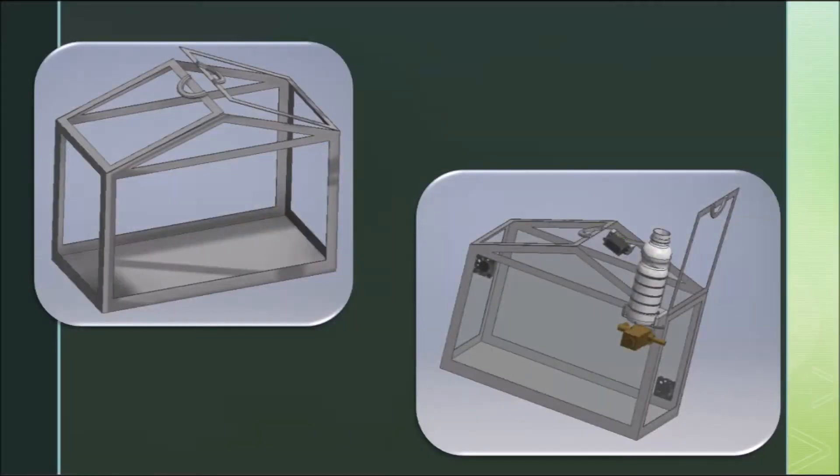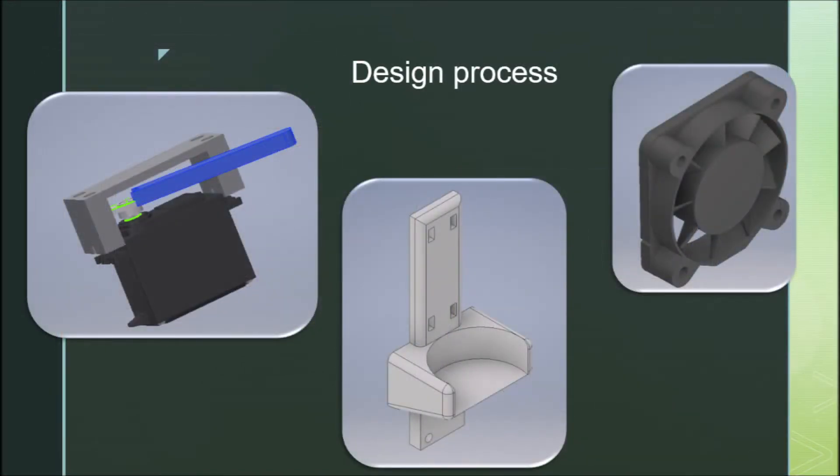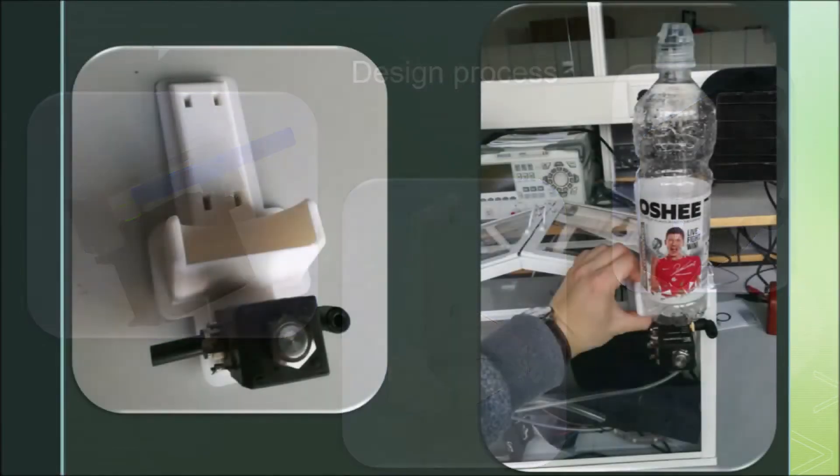When building the greenhouse we used an IKEA windowsill greenhouse as a basis. Several parts were designed and cut and 3D printed, for example the holder for the servo, the water bottle, or the electronics box.